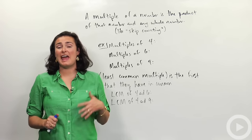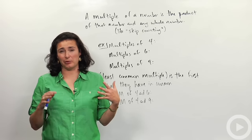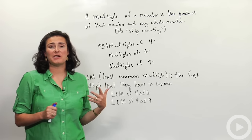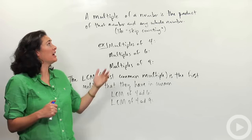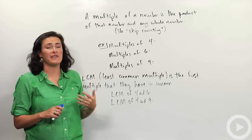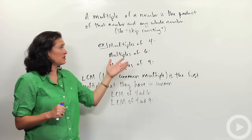We're going to be talking here about multiples and least common multiples between a couple different numbers. The first thing, when I think of multiples, I think of skip counting. Officially, a multiple of a number is the product of that number and any whole number. So we'll practice,